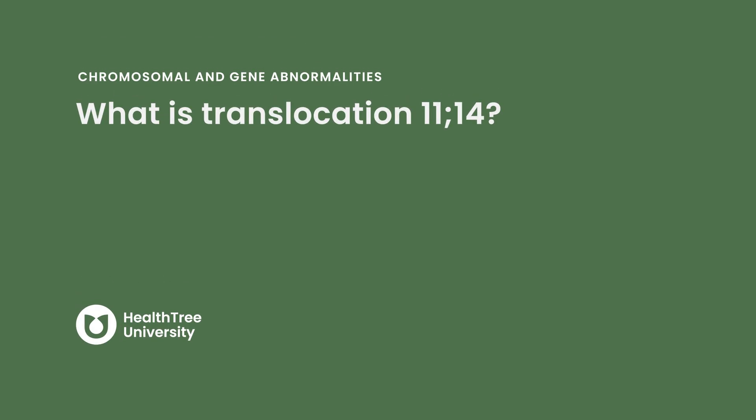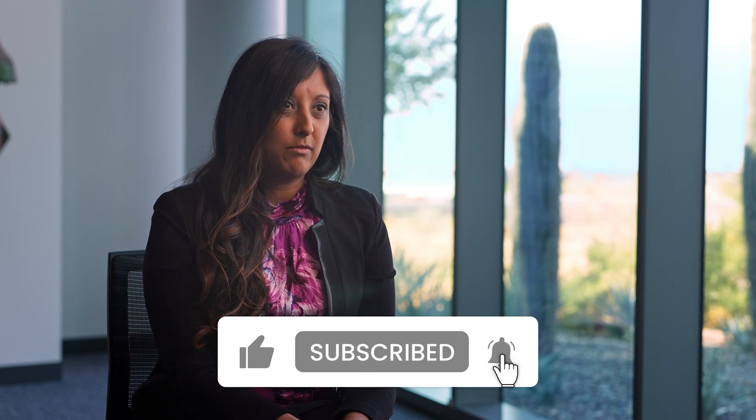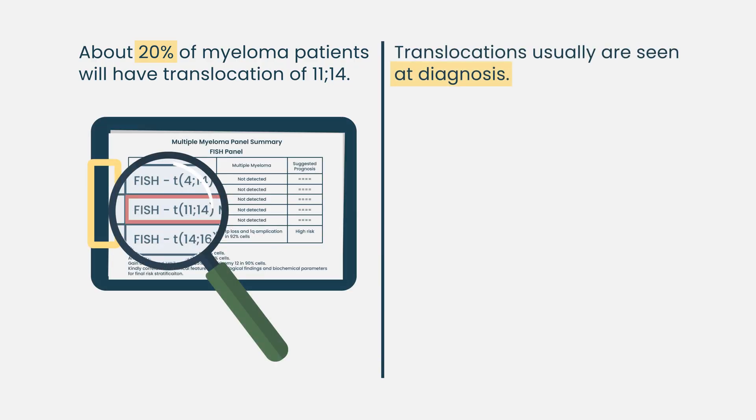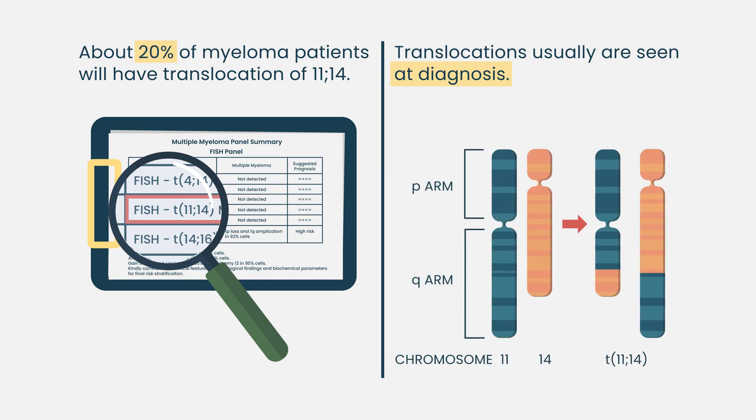What is translocation 11;14? In multiple myeloma, we have cytogenetics and FISH testing that tells us what the genetics or programming of the cells might be doing. About 20% of patients with myeloma have translocation 11;14. It's usually seen at diagnosis and typically continues through all the different treatments we do, unlike some genetic changes that appear later as the myeloma evolves.